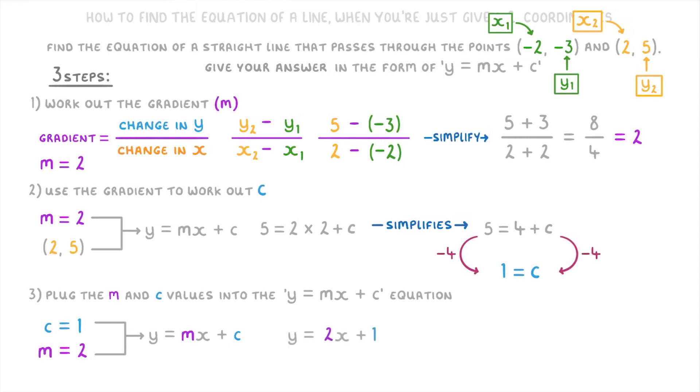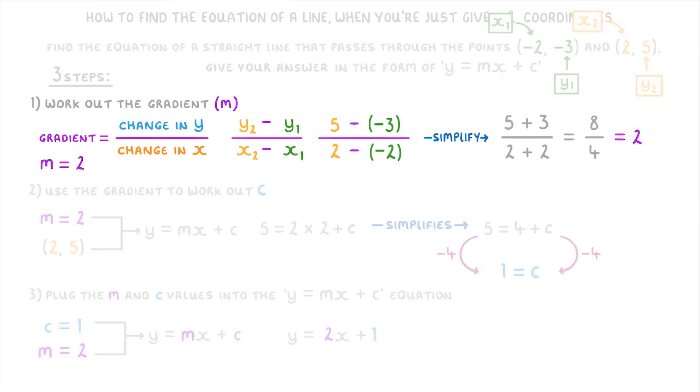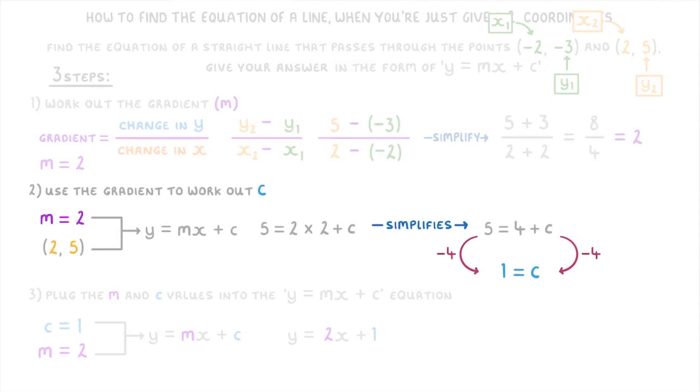So to sum all of this up, we first found m by finding the gradient, then we used that m value and one of the sets of coordinates to work out c, and then we plugged m and c into the y = mx + c equation to get our answer.